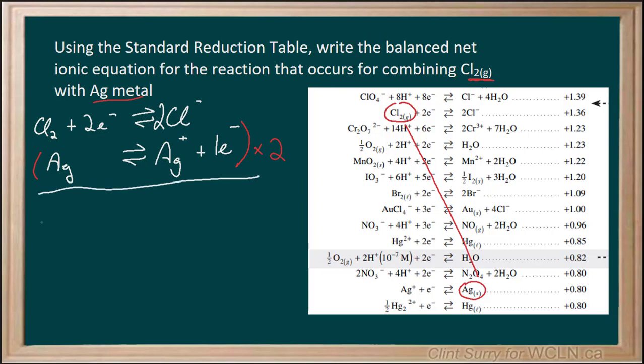So when I go and balance this, I can take the chlorine from the first reaction, plus two silver from the second reaction. I'm not going to bother writing the electrons in because we balance them. So that means there will be two electrons on the reactant side, two electrons on the product side, so they would just cancel out. And then I'm going to get two chloride ions plus two silver ions.